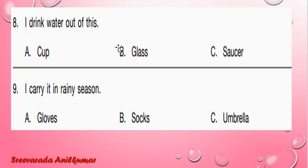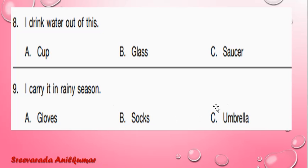Ninth one: I carry it in the rainy season. What do you carry in the rainy season? You will carry umbrellas, raincoats, and so on. So here we have umbrella. C is the correct choice.